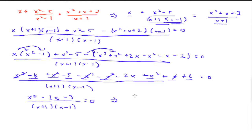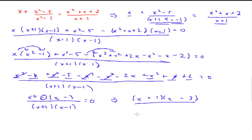I think we can factor the numerator: x squared minus 2x minus 3. We have x and x, and the only possible factor of 3 is 3 times 1. Since the middle term is negative, I'll put the negative in front of the 3. So negative 3x plus x gives negative 2x — that's our factored form: x minus 3 times x plus 1, all over the common denominator of x plus 1 and x minus 1. As you can see, the x plus 1 cancels out.